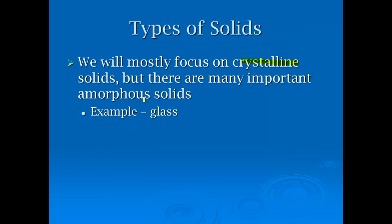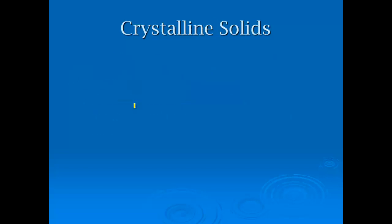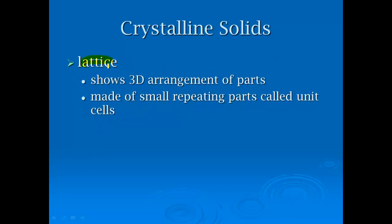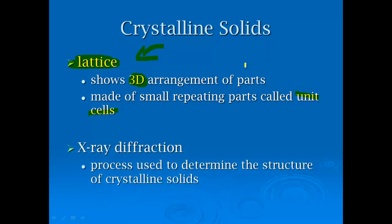We're going to mostly focus on crystalline. There are some pretty important amorphous solids as well. Glass is one of them. They have this irregular formation and kind of don't follow all the rules, but we're going to focus on the crystallines. Now with every crystalline solid, you have this lattice structure. We've talked about lattice energy, which is the energy associated with gaining this crystal structure from two gaseous atoms. It shows the 3D arrangement of parts. It's made of small repeating parts called unit cells. X-ray diffraction is a process used to determine the structure of crystalline solids. They zap it with this X-ray radiation, and based on how it changes direction or is diffracted, they can use that to determine the structure.